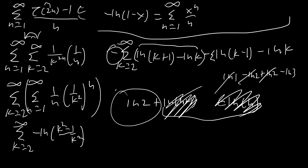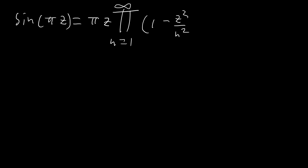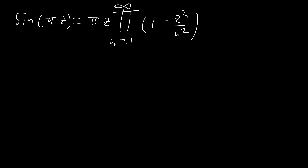It's going to be a whole different story for the next series. Before we start, I want to introduce an identity we're going to use — I won't prove it here since that would take two whole videos. We're going to use the sine product formula: sine(pi·z), where z can be complex, can be represented as an infinite product equal to pi·z times the product from n equals 1 to infinity of (1 minus z squared over n squared). You can see how this relates to our sum. We're going to evaluate the sum from n equals 1 to infinity of (negative 1)^n times zeta(2n) all over n.